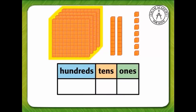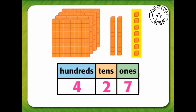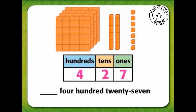There are four hundreds, so we write a four in the hundreds place. There are two tens, so write a two in the tens place. There are seven ones, so write a seven in the ones place. Now write the number four hundred twenty-seven.